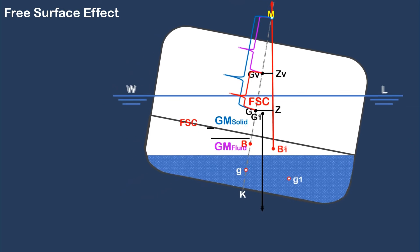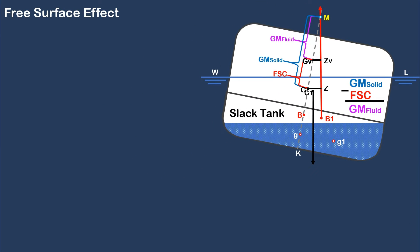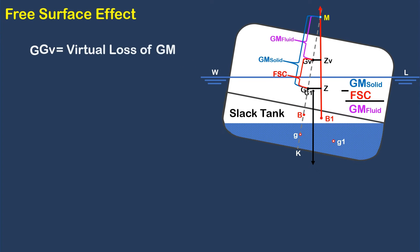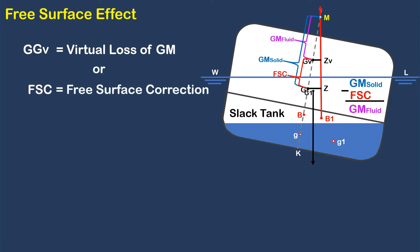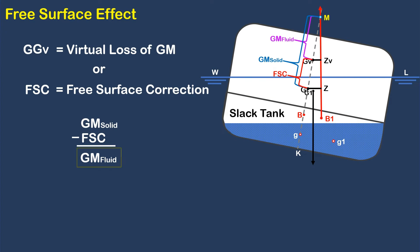A ship with a partially filled tank or slack tank, when heeled or tilted at sea, will have a loss of metacentric height called a virtual loss of GM, also known as the free surface correction, FSC. By subtracting the free surface correction from solid GM, we can obtain the fluid GM.